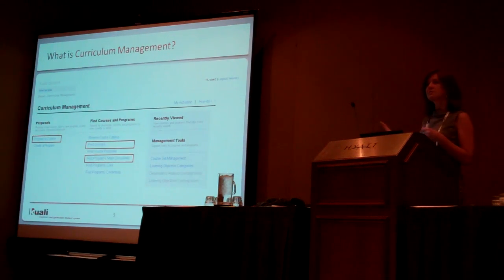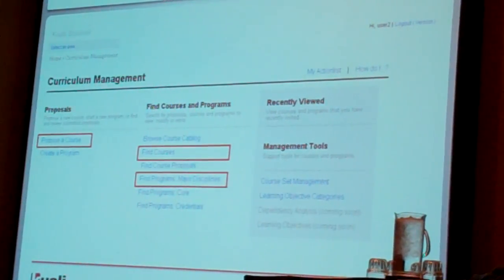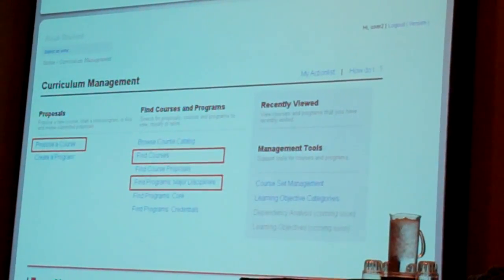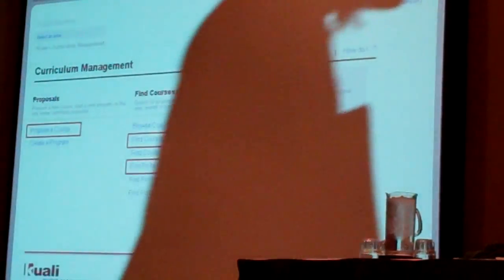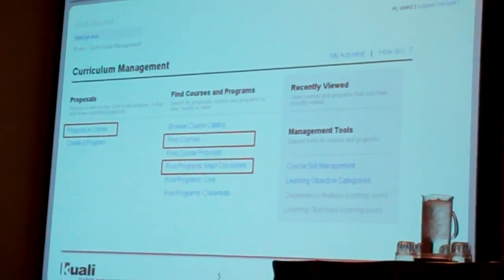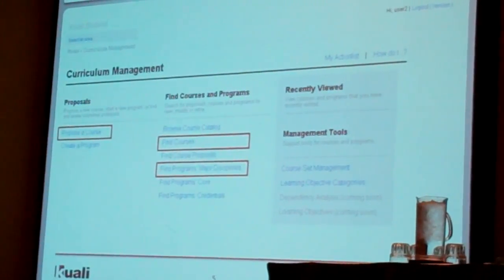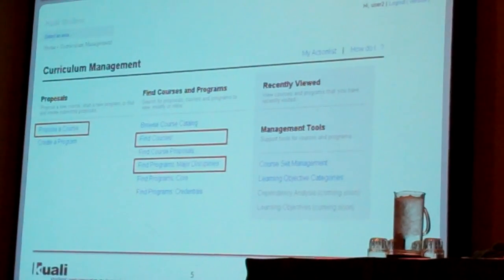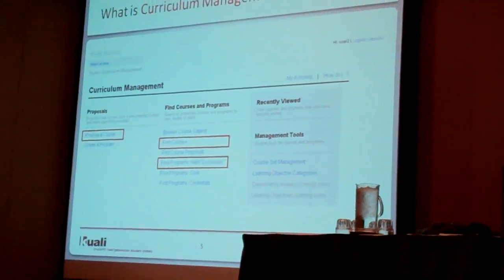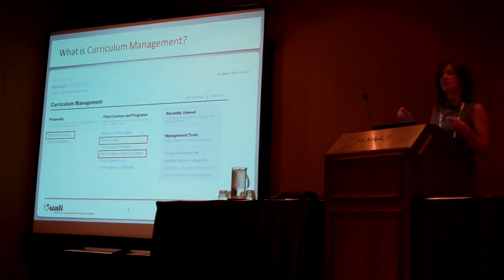This is the landing page for curriculum management, just to help orient you when we go into the application. On the far right we've got proposals — proposing a course. The things that are highlighted are where we'll spend the bulk of our demo time: proposing a course, finding courses and programs. On the right is recently viewed, where things you've recently viewed show up, and some of the management tools like course set management and learning objective categories.